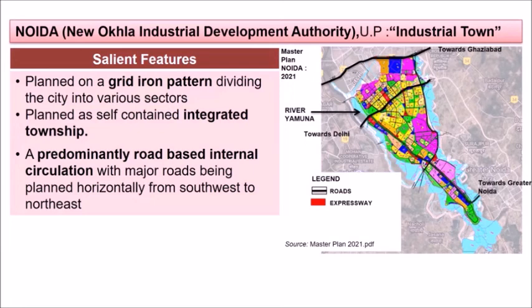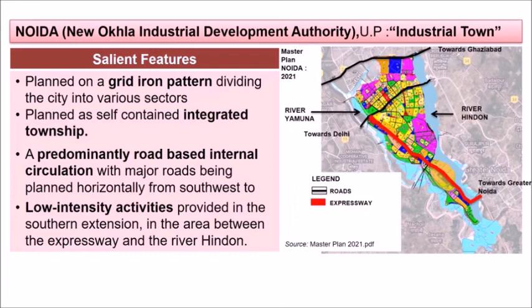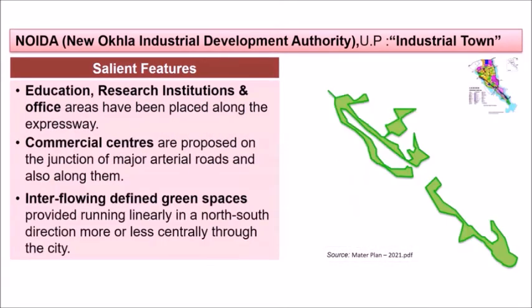NOIDA is planned on a grid iron pattern dividing the city into various sectors and was planned as a self-contained integrated township. The city was planned with predominantly road-based circulation, with major roads running from southwest to northeast. Low intensity activities were planned in the southern extension between the expressway and the river Hindon. Education, research institutions, and office areas are planned along the expressway, with commercial centers at junctions of major arterial roads. Interflowing green areas run linearly in a north-south direction through the center of the city.